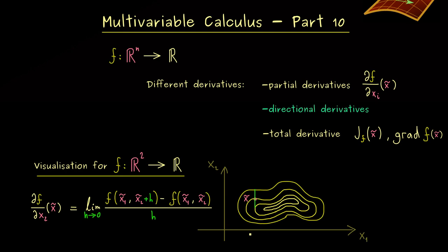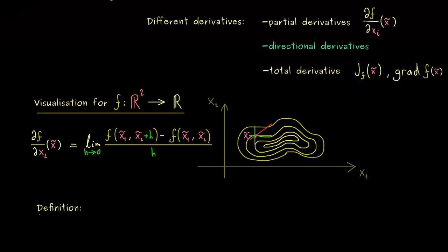We also have the partial derivative with respect to x_1. But now the question is: can we also look at other directions in the plane? For example, is it possible to define a derivative with respect to some arbitrary direction? Of course this shouldn't be a problem, because that line also gives us a one-dimensional function where we can calculate the ordinary derivative.